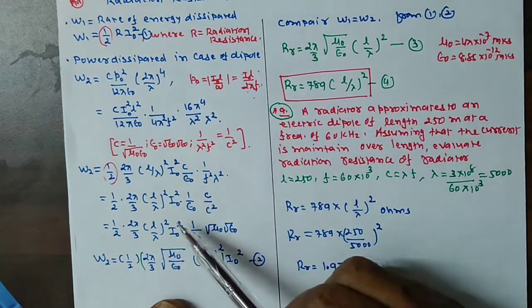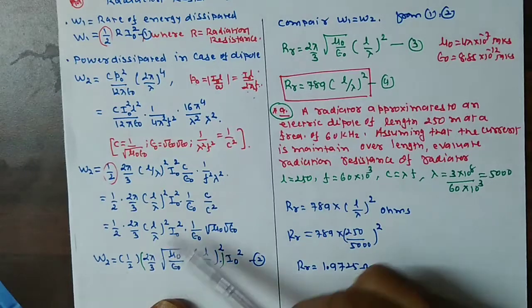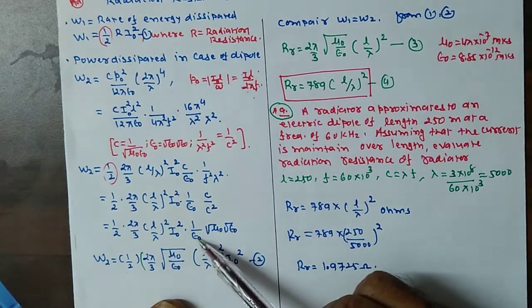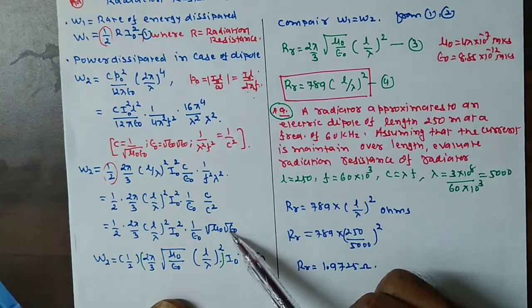This will be equal to 1 half 2π by 3 L by λ square I0 square, all I0 square. This will be equal to 1 half square root of ε0.